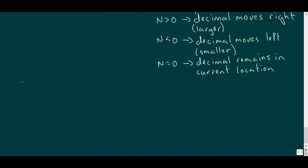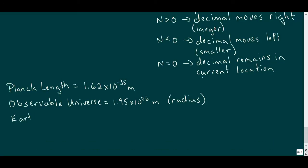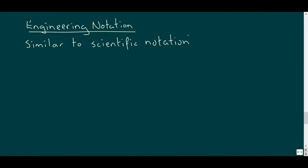So the Planck length is 1.62 times 10 to the power of minus 35 meters. The radius of the observable universe is 4.35 times 10 to the power of 26 meters, despite the number on the screen, while the mass of the Earth is 5.98 times 10 to the power of 24 kilograms, and the atomic radius of carbon is 7.0 times 10 to the power of minus 11 meters.